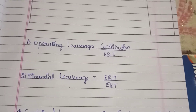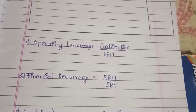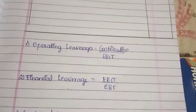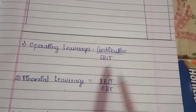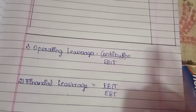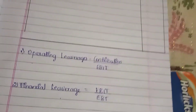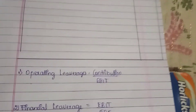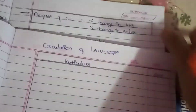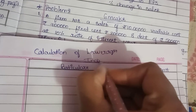Combined Leverage is Operating Leverage multiplied by Financial Leverage. We need the operating leverage first — that requires contribution and EBIT. So we need to prepare the income statement according to format.